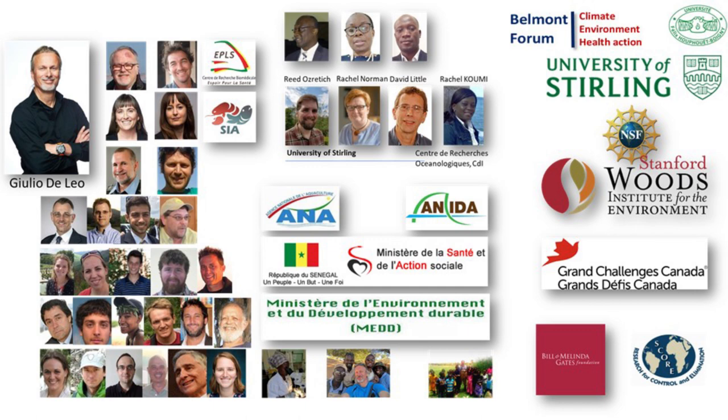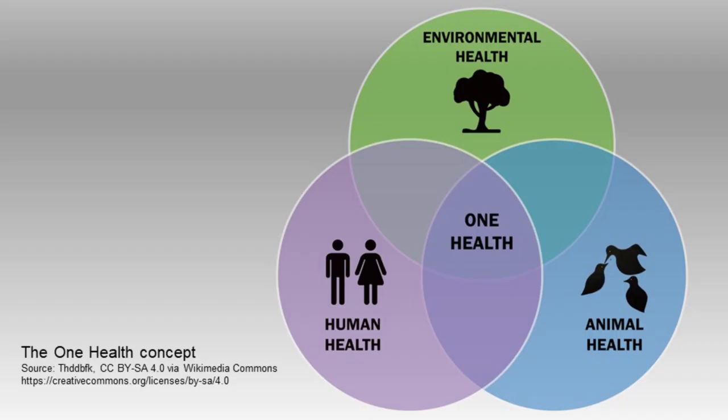We hear quite a lot about one health-based approaches to solving complex problems these days, but can you briefly tell us what one health really means? So one health is a concept that the health of humans, animals, and our environment are really influencing and influenced by one another. And a one health-based approach to a problem, especially a complex problem, recognizes this interdependability of these three factors, which need to be considered when developing a long-term solution.